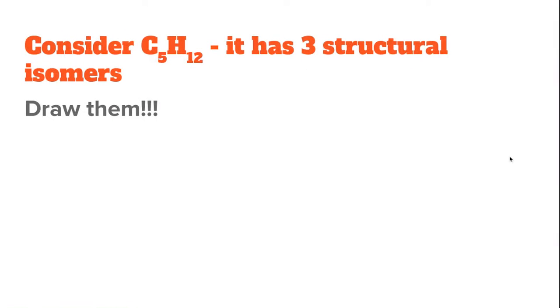Now it's your turn to put this into practice. Consider the molecular formula C5H12 - it has three structural isomers. I want you to pause the video and try to draw the three structural isomers of C5H12. Pause the video now.